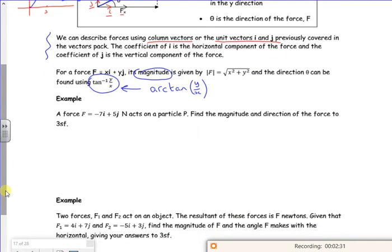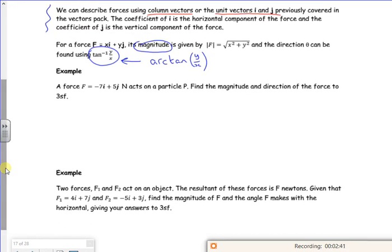So if you see that it just means tan to the minus one. They do it with sine and cosine every so often, so instead of sine to the minus one like inverse sine or cos to the minus one inverse cos, they say arc sine or arc cos. So let's have a look at this one then. You've got a force f, now this is telling you it's going seven left and five up.